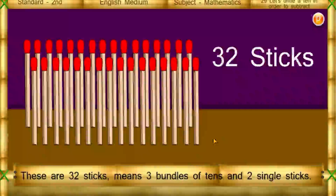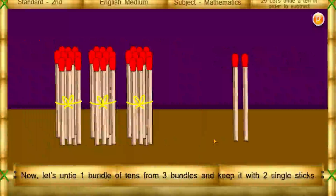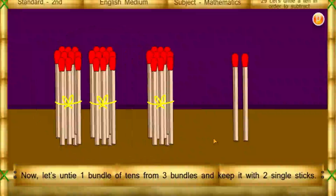32 sticks means three bundles of 10 and two single sticks. Now let's untie one bundle of 10 from the three bundles.